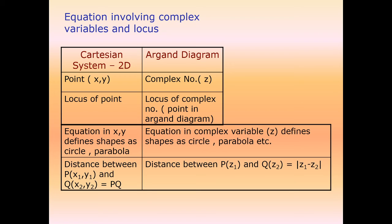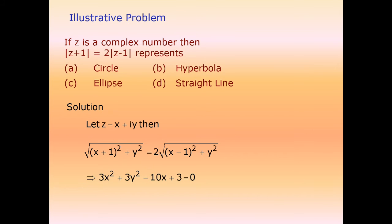In the Argand diagram, the point (x, y) corresponds to the complex number z. The locus of a complex number defines shapes — just as equations in x define circles, parabolas, etc. The distance between two complex numbers corresponds to their modulus difference. For example, if |z+1| = 2|z-1|, substituting z = x + iota·y and simplifying gives the equation of a circle.